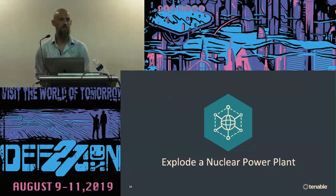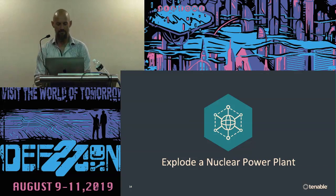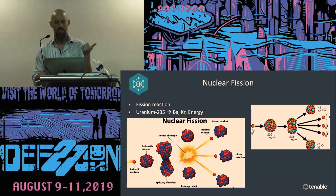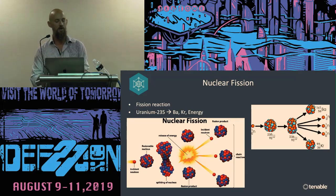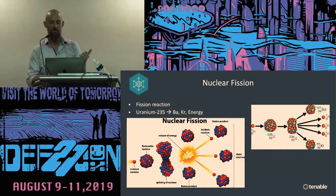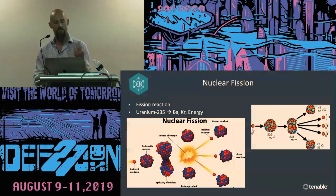Let's look at the fun part — the application of these vulnerabilities. I chose to look at a nuclear power plant. First, let me turn you into nuclear physicists in one minute. Nuclear fission is a process where a large nucleus splits into two smaller nuclei, releasing energy. In nuclear power plants, we use uranium-235, which splits into krypton and barium, releasing three more neutrons and heat. Each of those neutrons can start another chain reaction — that's fission.